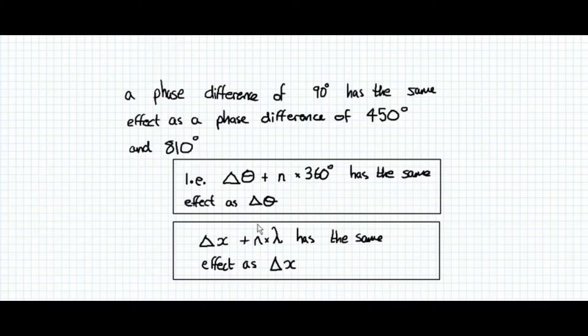And so in general, we can say that for there to be the same influence, the same effect, the phase difference plus an integer number of a complete cycle has exactly the same effect as just that phase difference. This means we can always subtract an integer number of 360 degrees and get the same influence. The same is true for path difference.